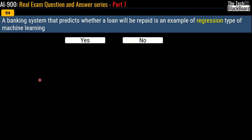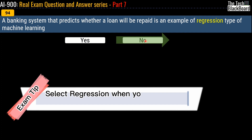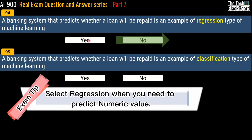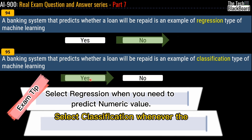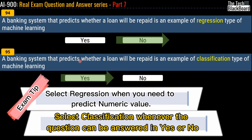Question 94: a banking system that predicts whether a loan will be repaid — is this an example of regression? The correct answer is No. Regression predicts numeric values; here we predict whether a loan will be repaid or not, which is a yes/no outcome, so regression does not apply. Question 95 asks the same scenario but for classification — and this time the answer is Yes. Use a classification model whenever the prediction is a binary outcome like yes or no, such as whether a loan can be repaid or not.